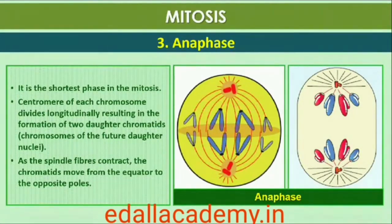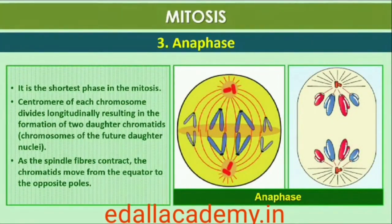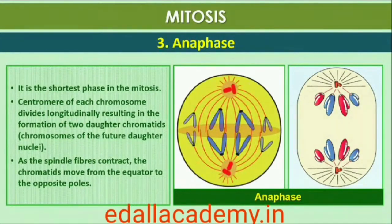At the onset of anaphase, each chromosome arranged at the metaphase plate is split simultaneously and the two daughter chromatids — now referred to as chromosomes of the future daughter nuclei — begin their migration towards the two opposite poles. As each chromosome moves away from the equatorial plate, the centromere of each chromosome is towards the pole and hence at the leading edge, with the arms of the chromosome trailing behind. Anaphase is characterized by the following key events: centromeres split and chromatids separate, and chromatids move to opposite poles.